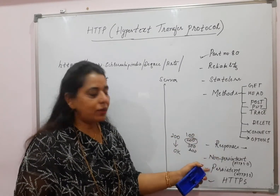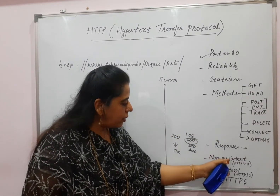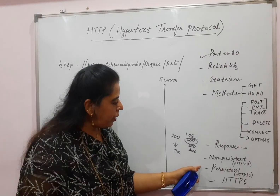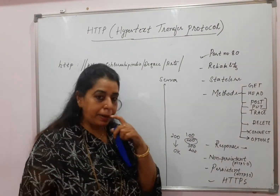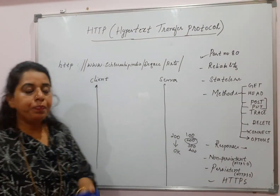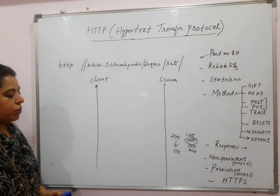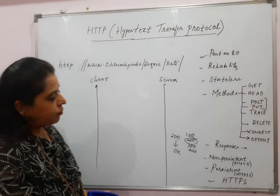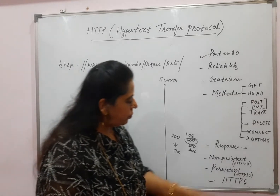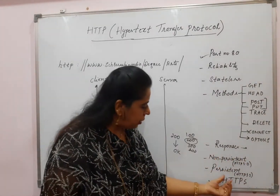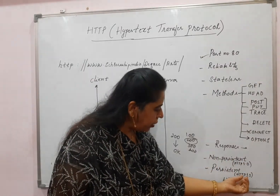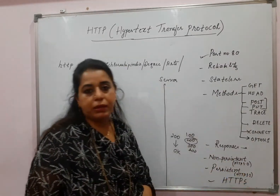HTTP has two properties: non-persistent and persistent. Version 1.0 is non-persistent and version 1.1 is persistent. Let us understand the difference between these two.